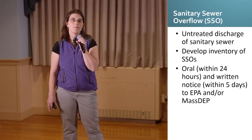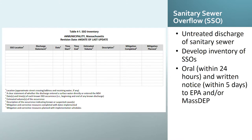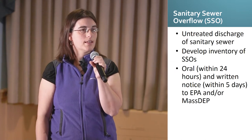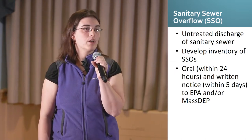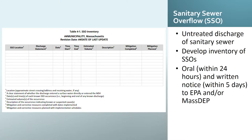Sanitary sewer overflows are a special case of an illicit discharge. The MS4 permit specifically calls them out and has specific requirements if you observe an SSO in your community. The permit requires that you develop an inventory of SSOs that occurred within the last five years. If you become aware of a sanitary sewer overflow, you need to report it to the EPA within 24 hours orally, then follow up with written notice to the EPA and MassDEP within five days. A tracking table — such as the one from the Central Mass Stormwater Coalition's template IDDE program — should include the location, source, date started, time started, time stopped, corrective measures implemented, or a schedule for corrective action.